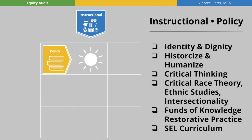When we look to the instructional policy, we must focus on identity and dignity of students and staff. The practice of historicizing and humanizing will allow for critical thinking. Consideration of theoretical frameworks from critical race theory and ethnic studies, such as intersectionality and funds of knowledge, should inform your policy. Restorative practice and social-emotional learning curriculum should also be included here.